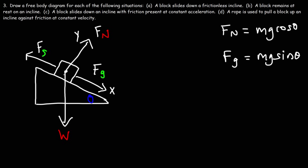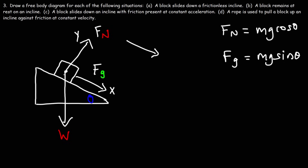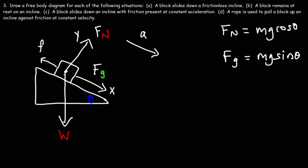For part C, a block slides down an incline with friction present at constant acceleration. There is constant acceleration, which means Fg has to be greater than friction. Because the block is sliding down, we have kinetic friction rather than static friction. Fk is going to be smaller than Fg.